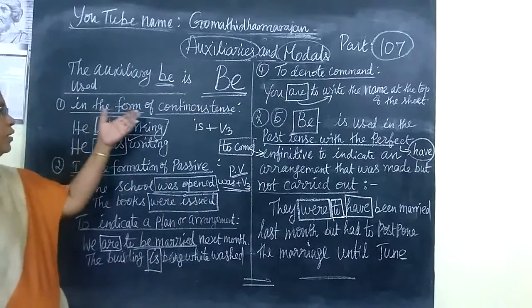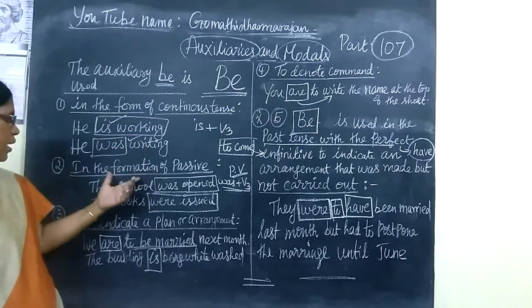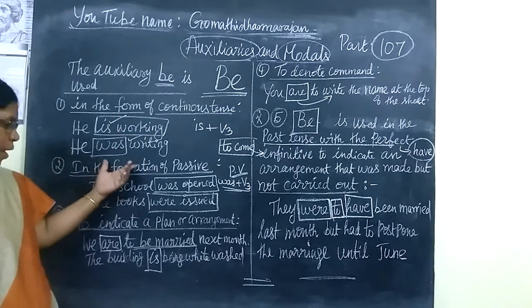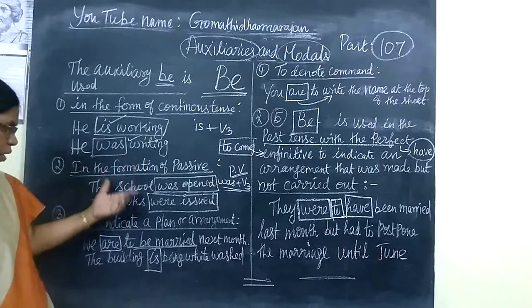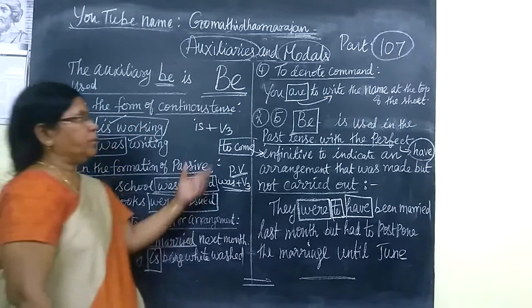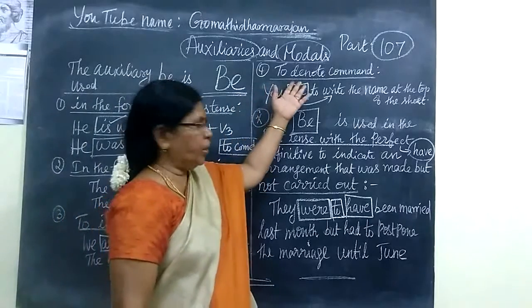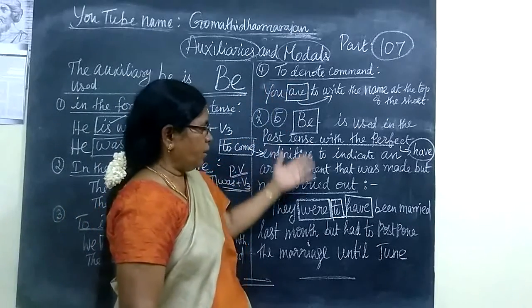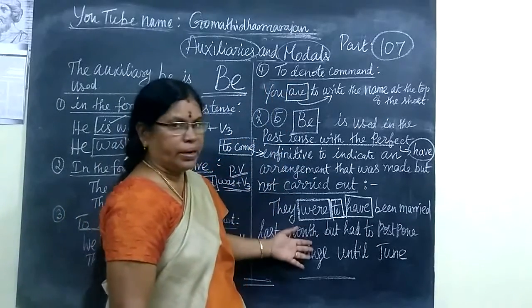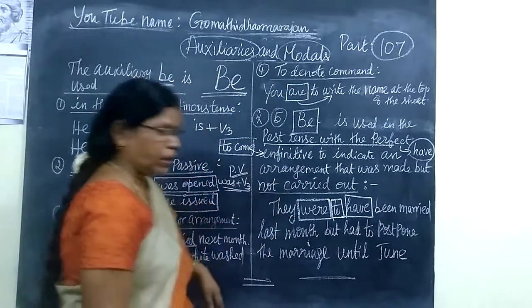To summarize the uses of the be-form: continuous stage, passive form, making an arrangement, denoting a command, and the last one — used with the perfect infinitive to express an unfulfilled plan. Thank you.